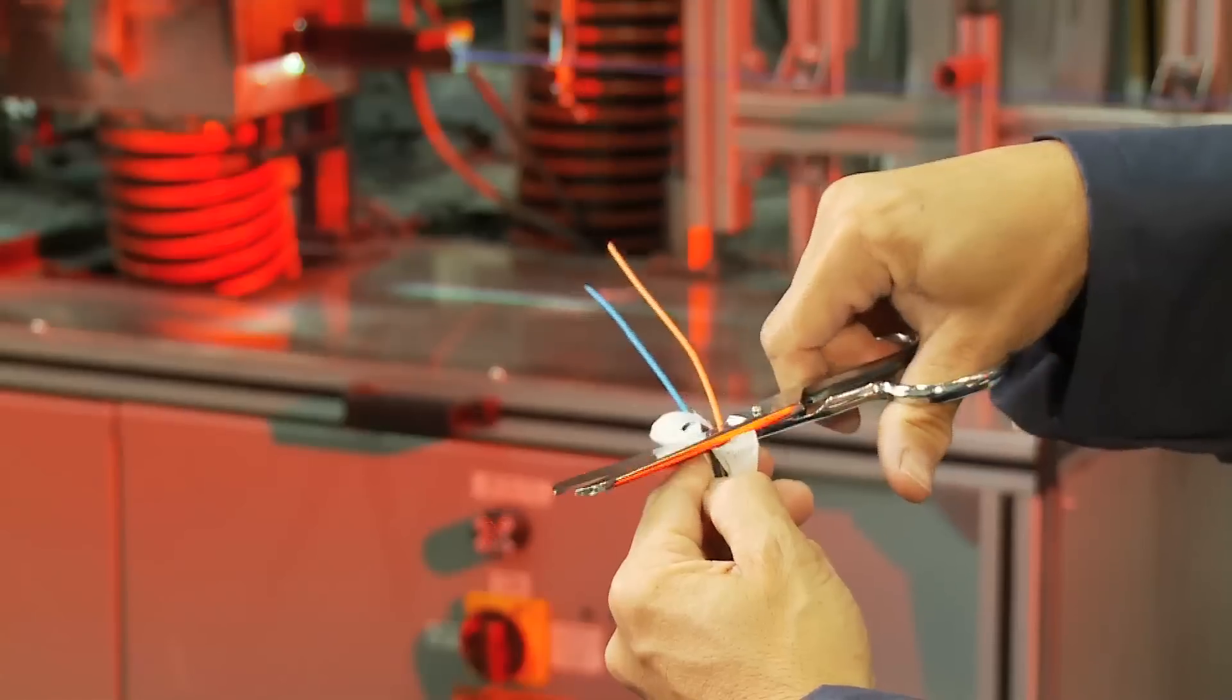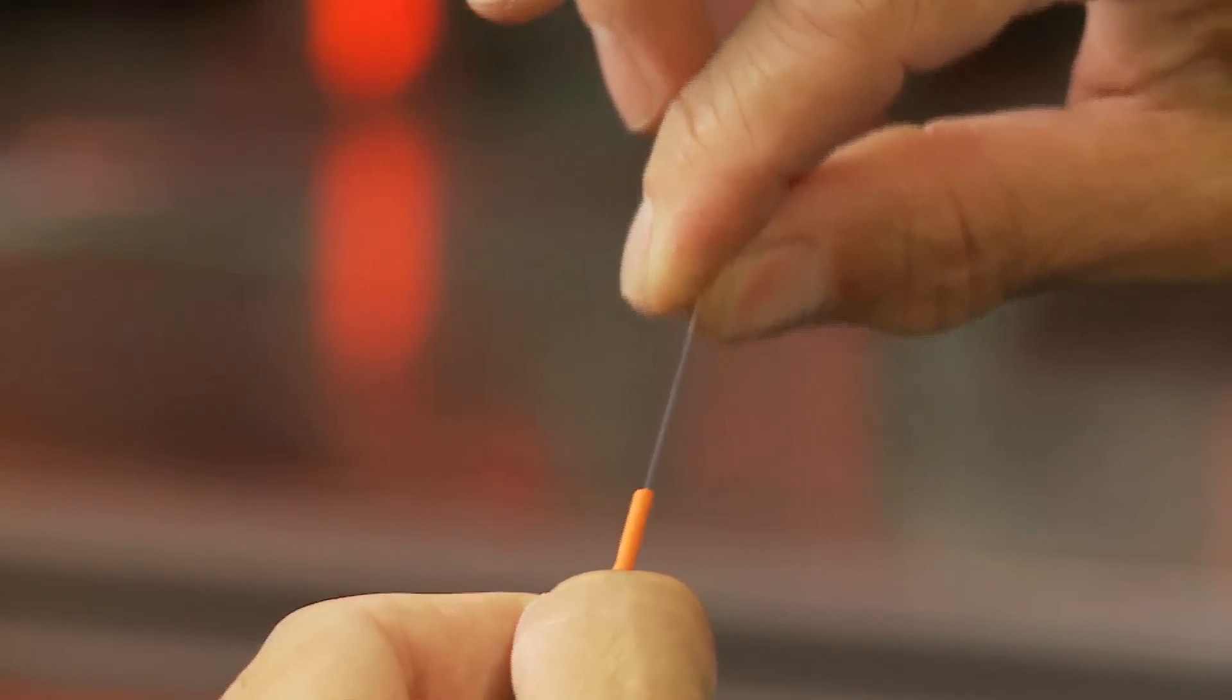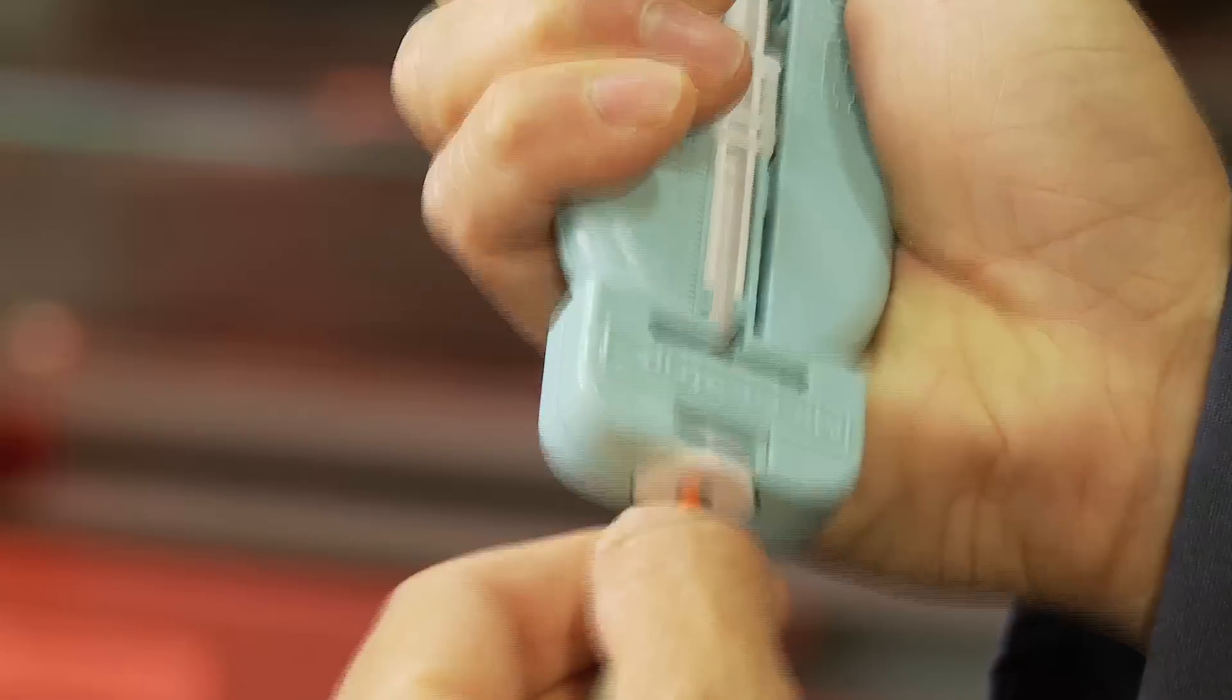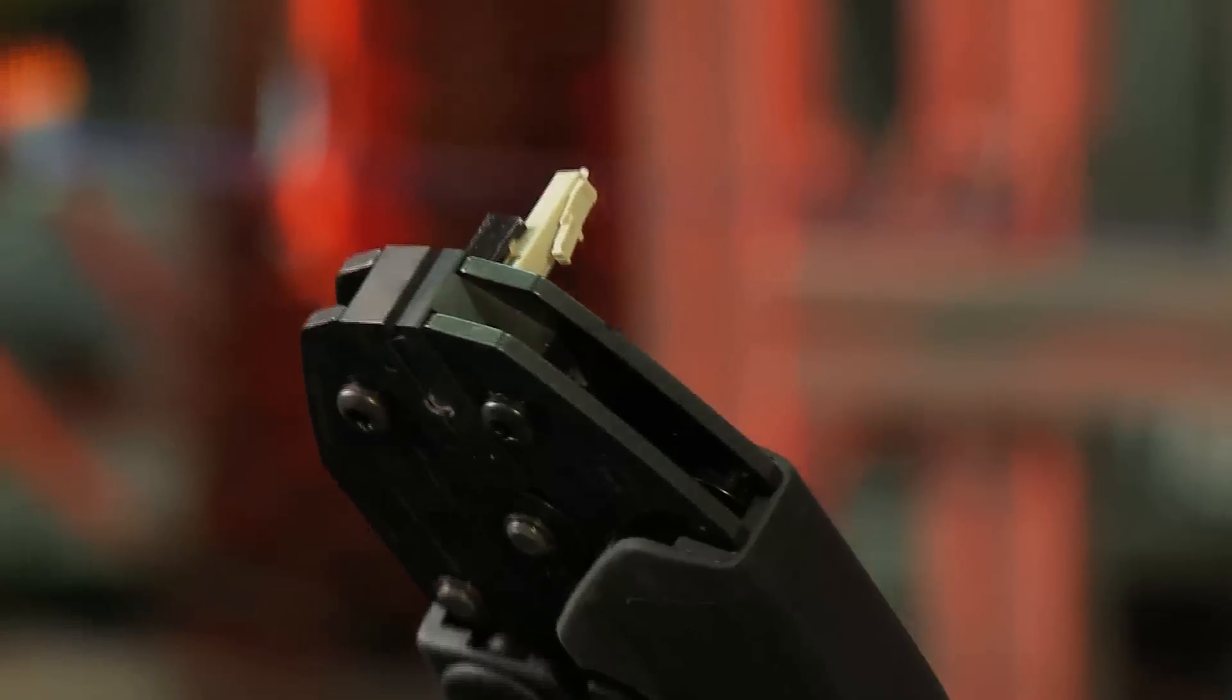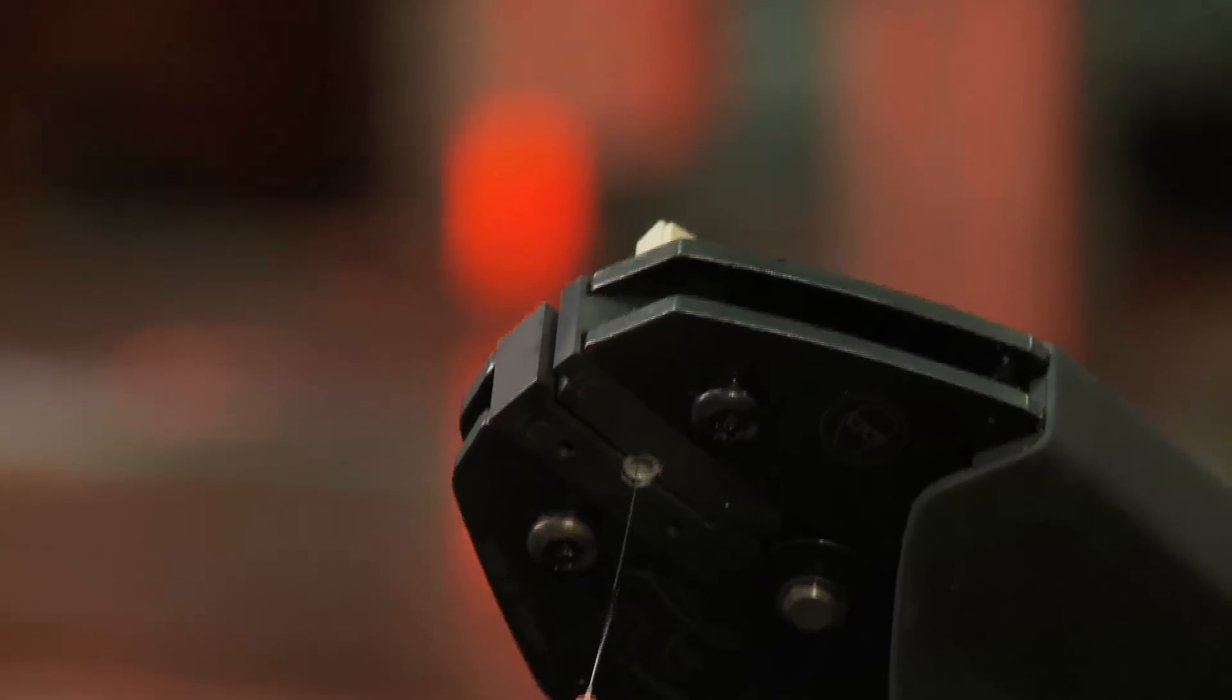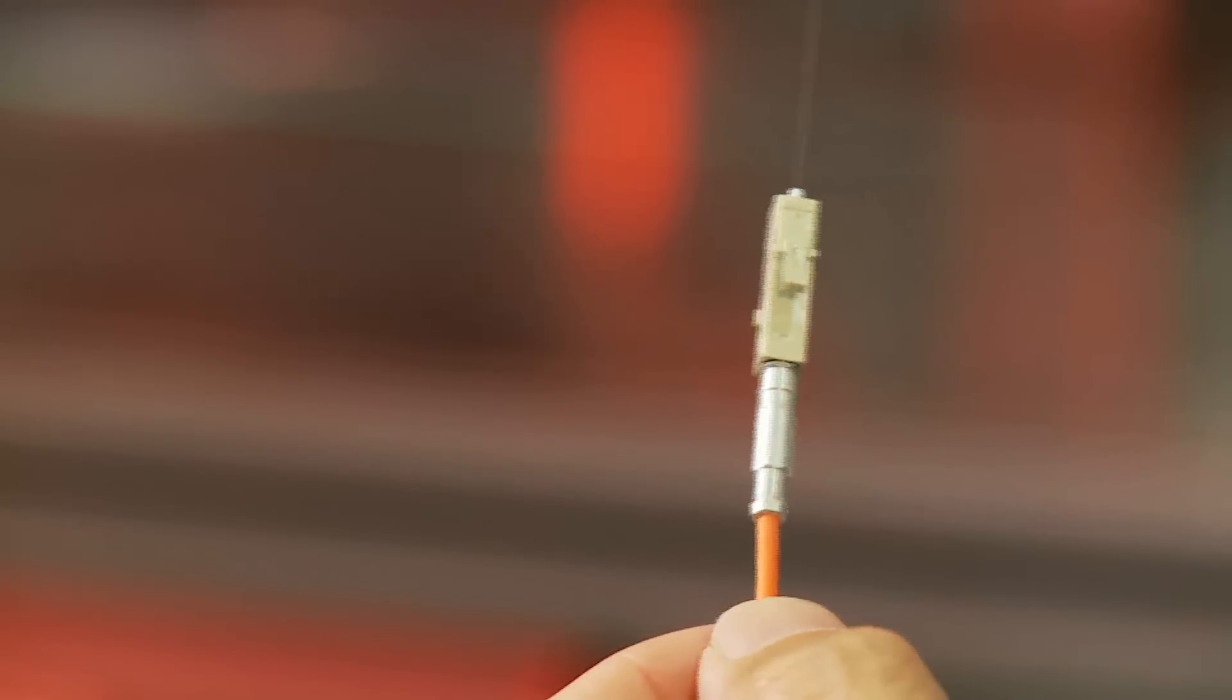Minutes to learn, seconds to connect. Strip the outer jacket. Remove the protective buffer. Install the connector. One single crimp captures the fiber connector and outer jacket.